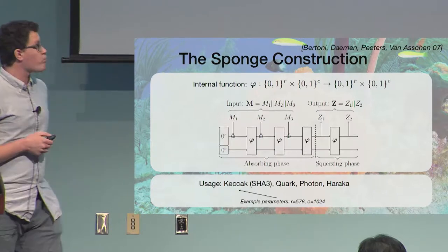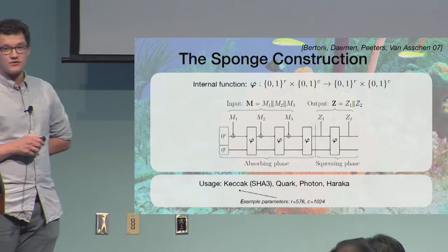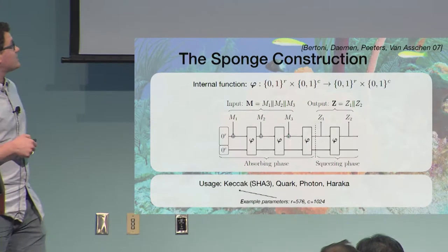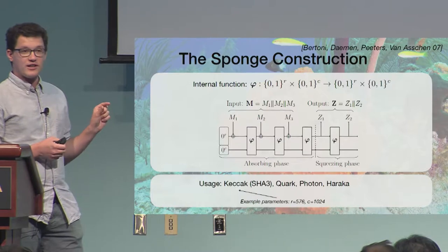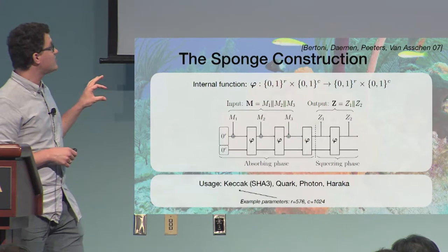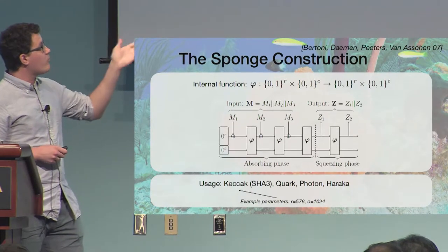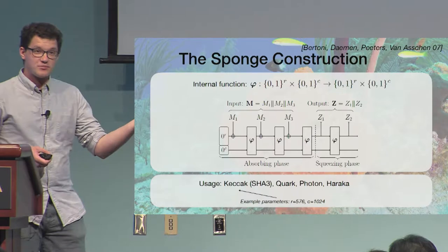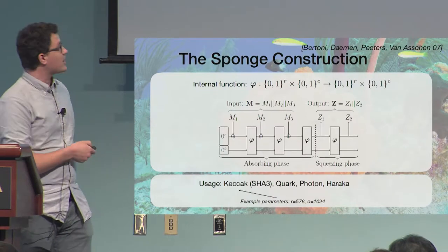So the sponge construction differs from CBC by the internal state. So now it consists of two parts, one of R bits and then a second part consists of C bits. And when we feed the input into the construction, we XOR the R bit blocks only to the first R bits of the state, and the second part is left untouched, well, until we evaluate the internal function on the whole state. And then we feed all the rest of the blocks. And this is called the absorbing phase. So someone will take a sponge and absorb water.